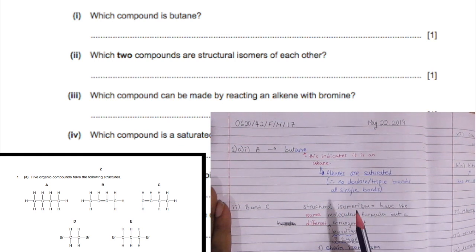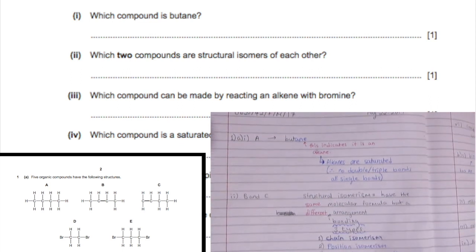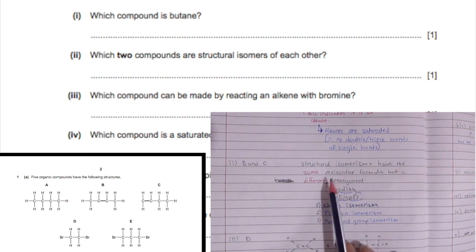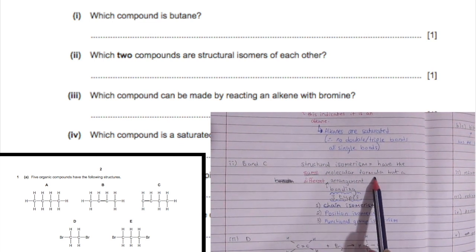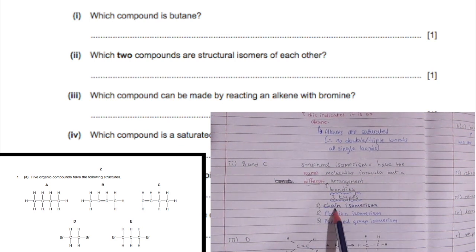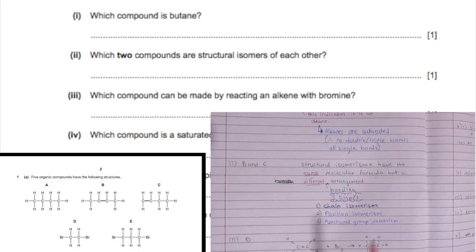The only compound that has four carbons and is completely saturated is A. Which two compounds are structural isomers of each other? That would be B and C. Structural isomerism means they have the same molecular formula but a different bonding arrangement. There are three types: chain isomerism, position isomerism, and functional group isomerism.